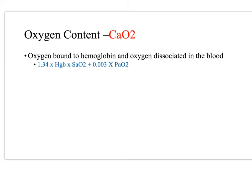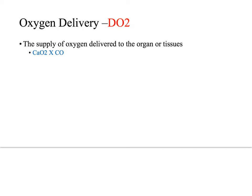The oxygen content equation is: 1.34 times the patient's hemoglobin times their sat, plus 0.003 times the patient's PaO2. The next term is oxygen delivery — the global delivery of oxygen throughout the body — defined as the product of the arterial oxygen content and the cardiac output, expressed as CaO2 times cardiac output.